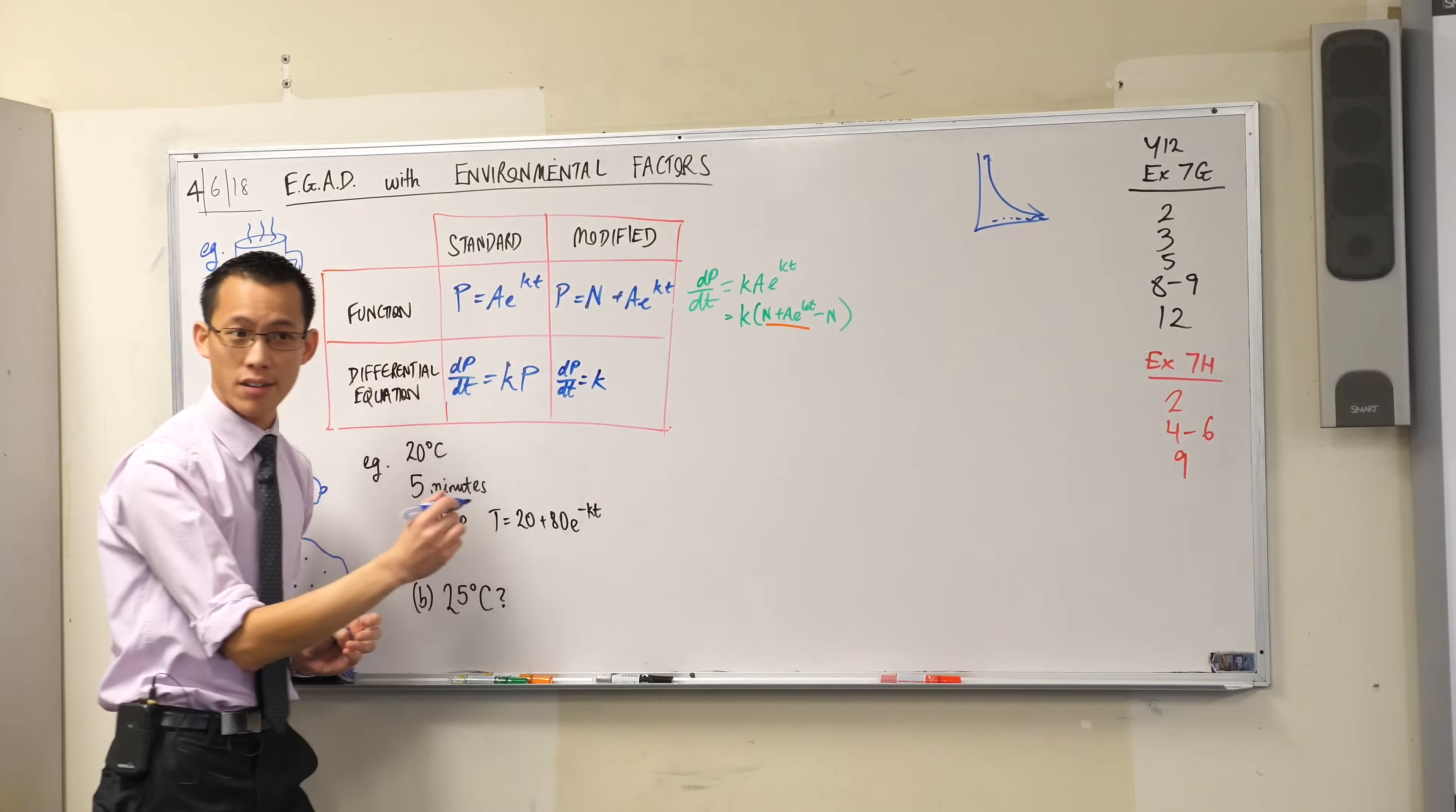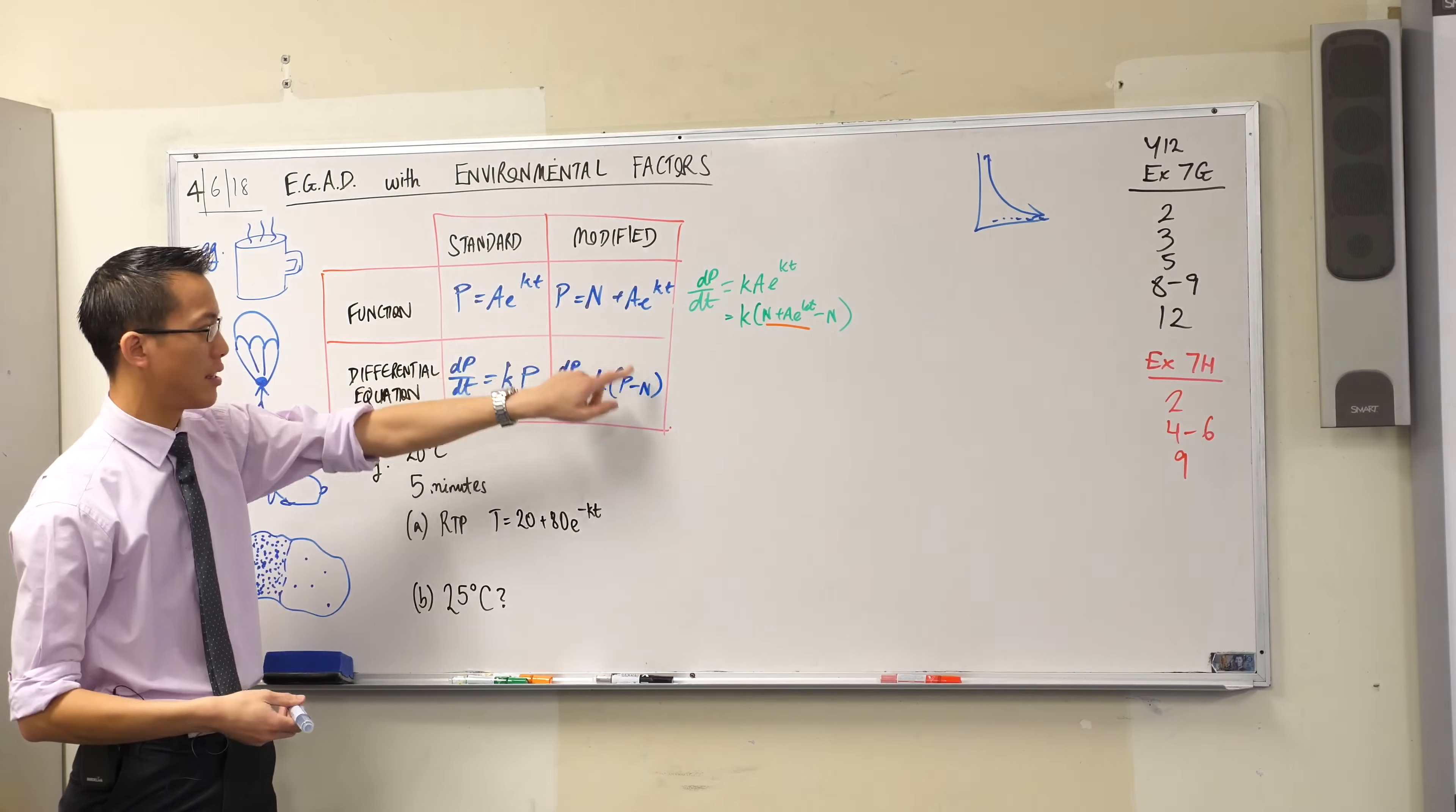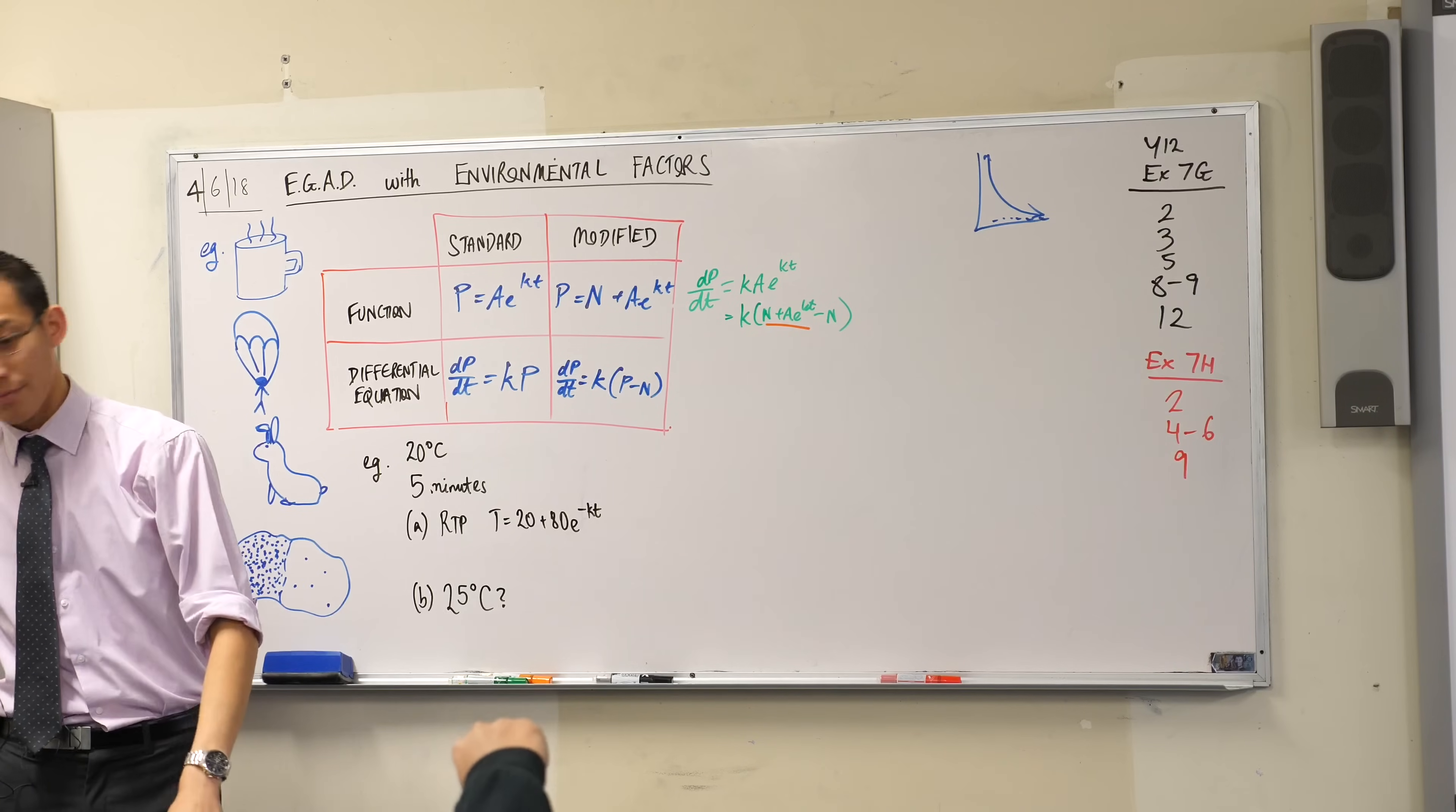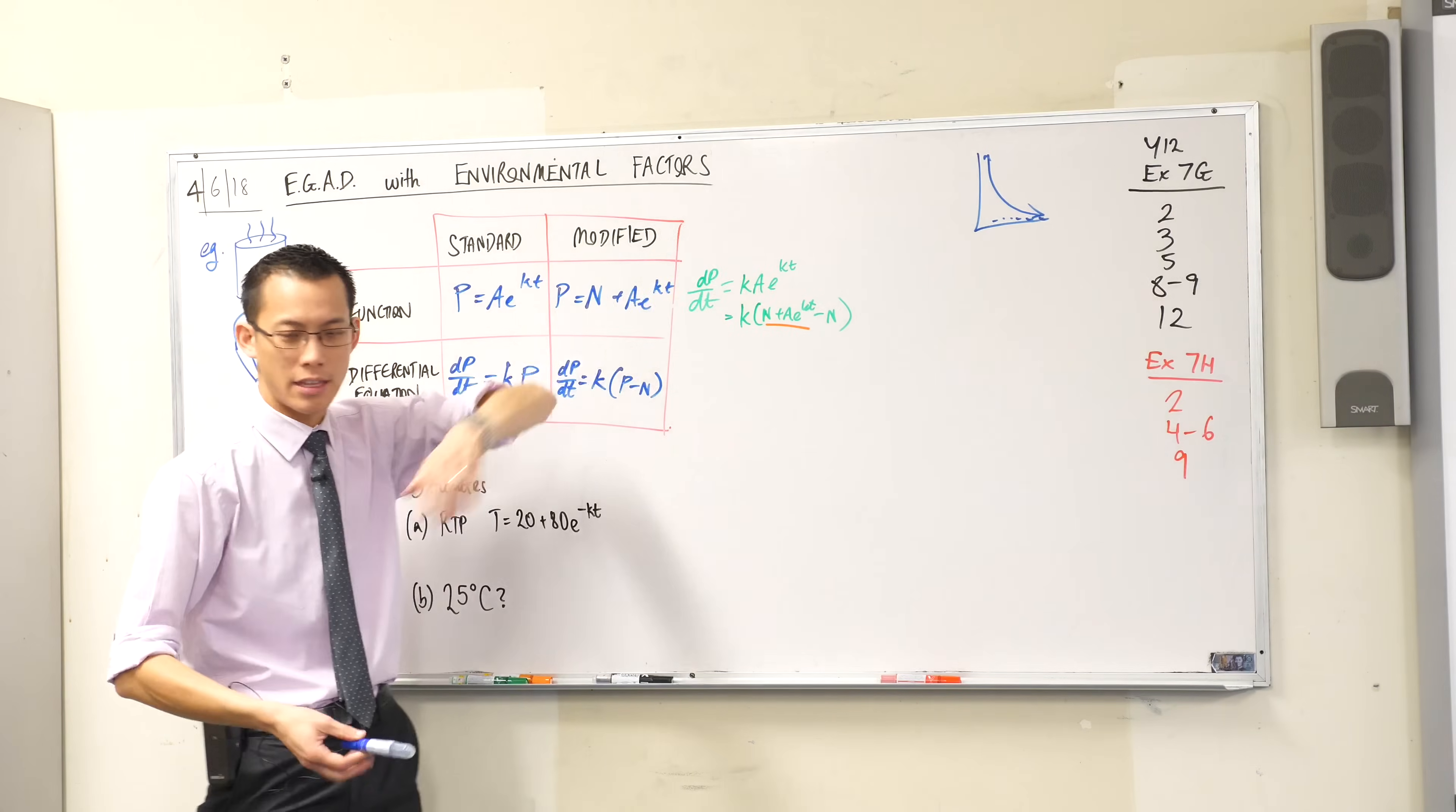If I replace that with P, I now have a differential equation which relates the derivative with the original function. I've got my k out the front and instead of just having P, I've got P take away M. You see this constant here just makes that slight difference. It's not a lot more complicated, but it does give you different situations.